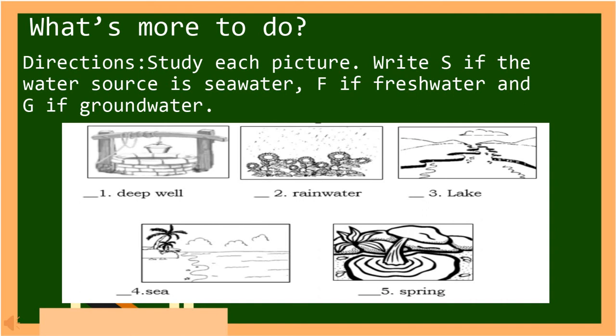For number one: deep well. For number two: rain water. For number three: lake. For number four: sea. And number five: spring.